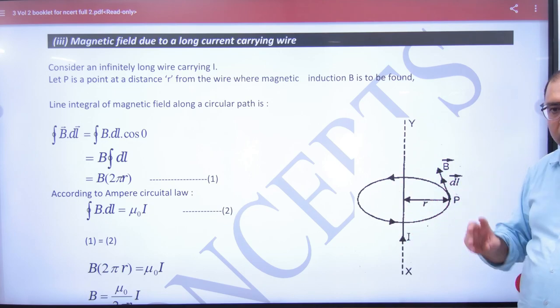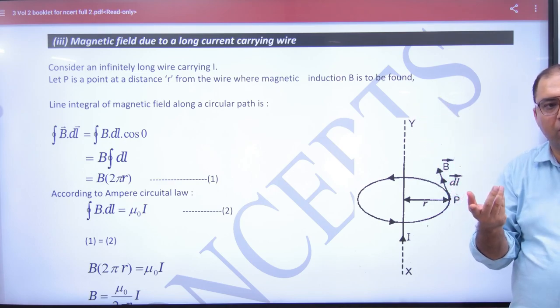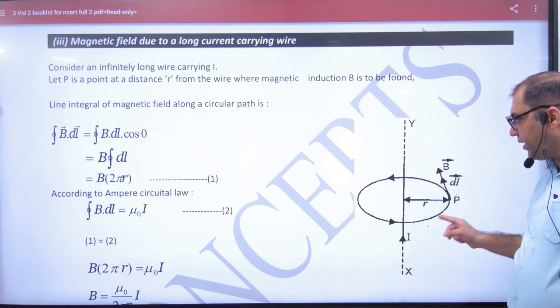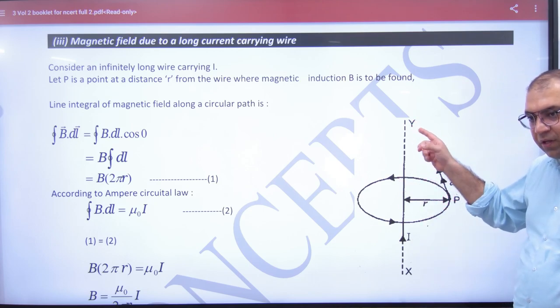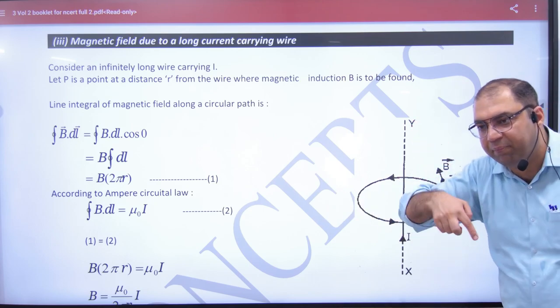If you want to find at a distance, take a closed path. This is a current carrying wire. Some people are confused - this is a current carrying wire and this is a closed path, imaginary.